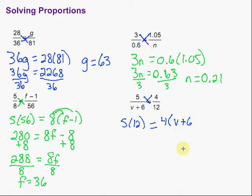So after we do that, start working it down. So 5 times 12 is 60. Equals, distribute this through. So we have 4v, and then 4 times 6 is 24. All right.